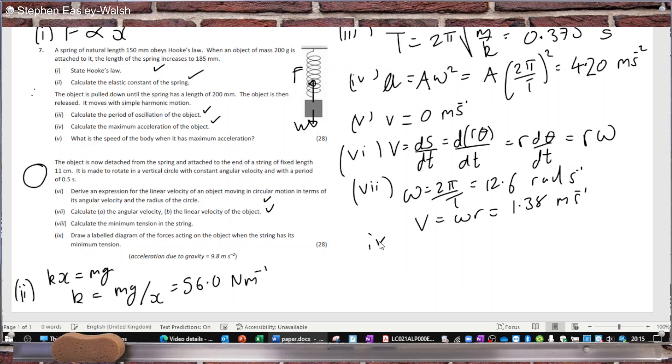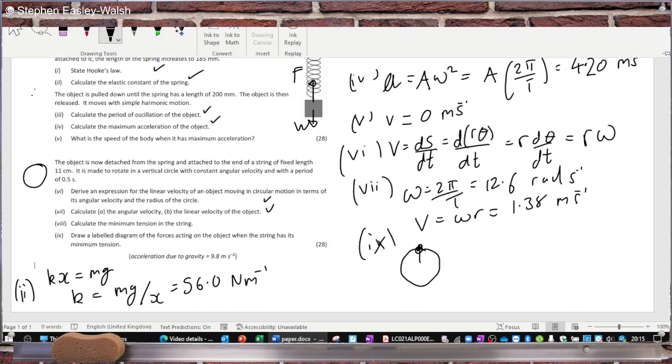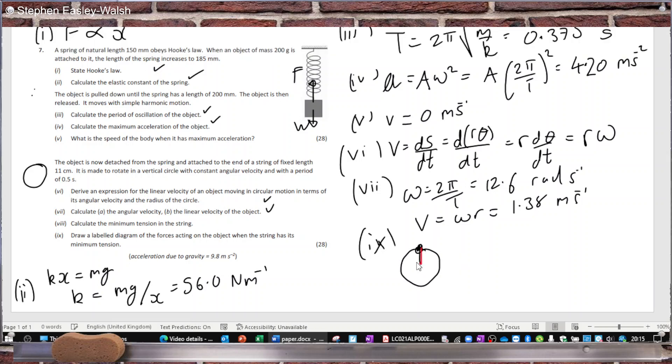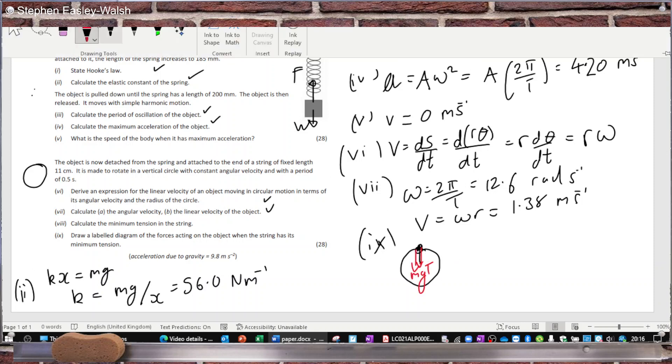For the diagram, it's moving in a circle at minimum tension at the top. The only two forces acting on it are the tension and the weight. For the last part, part 8.